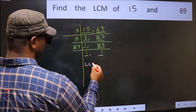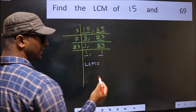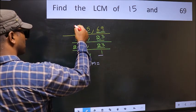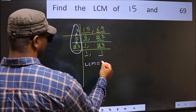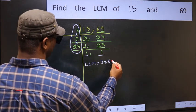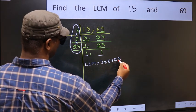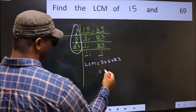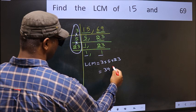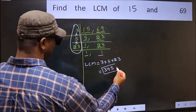So our LCM is the product of these numbers: 3 into 5 into 23. When we multiply these numbers we get 345. This is our LCM.